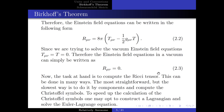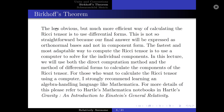Now, the task at hand is to compute the Ricci tensor. This can be done in many ways. The most straightforward but slowest way is to compute it by components using the Christoffel symbols. To speed up the calculations of the Christoffel symbols, one may opt to construct the Lagrangian and solve the Euler-Lagrange equations. The less obvious but much more efficient way is to use differential forms. The fastest and most adaptable way is to use a computer. In this lecture, we will use both the direct computation method and the method of differential forms. For those who want to use a computer, I strongly recommend learning a computer algebra system like Mathematica, as detailed in Hartle's Mathematica notebooks in Hartle's Gravity: An Introduction to Einstein's General Relativity.